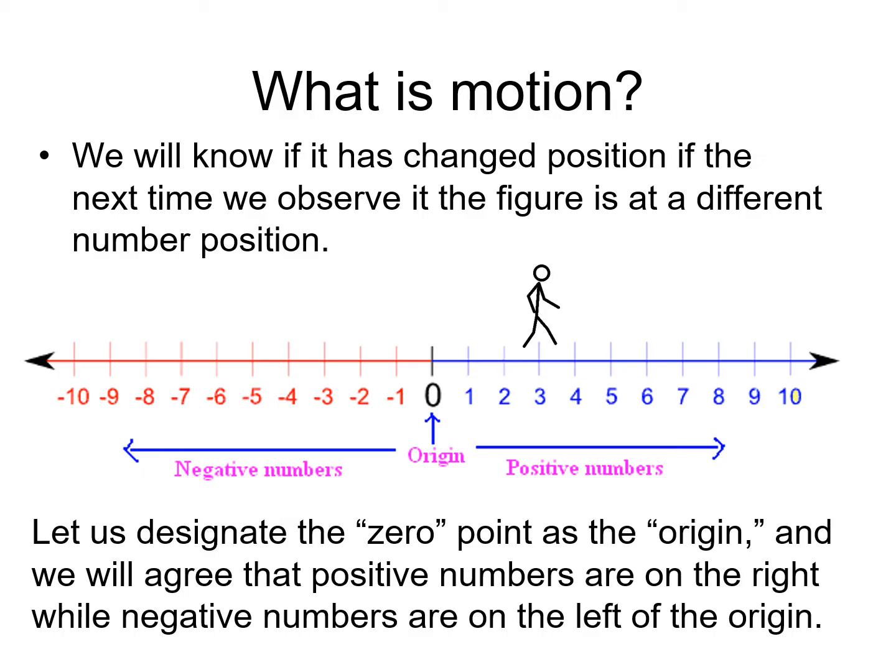We designate the zero point as the origin on our number line and in the United States we typically agree that positive numbers are written on the right of the origin whereas negative numbers are on the left of the origin. You may never have given that much consideration but the direction is completely arbitrary. We have to agree on it. So positive on the right, negative on the left of the zero or the origin point.